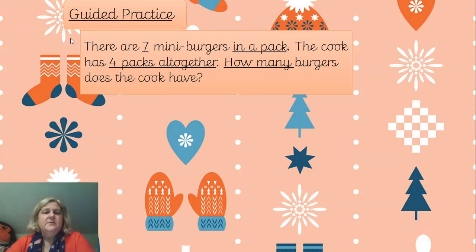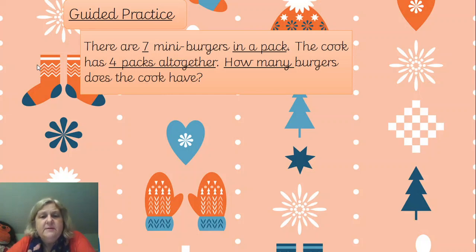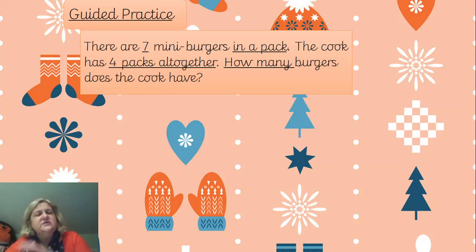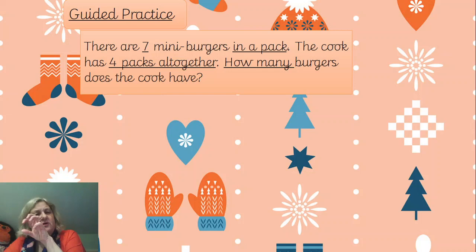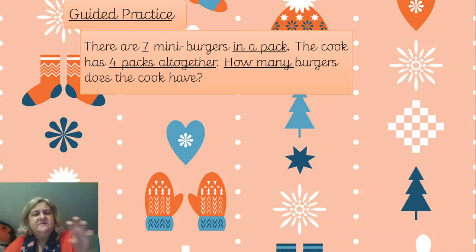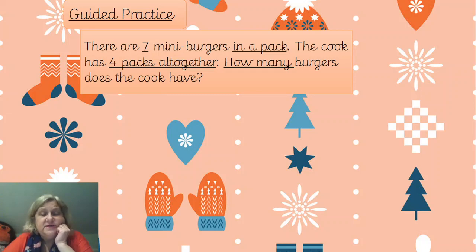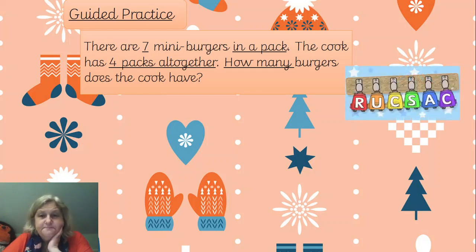This is a guided one: there are seven mini burgers in one pack - seven in one pack. The cook has four packs altogether. One pack has got seven burgers and they've got four packs, so I've got four lots of seven mini burgers. My answer is definitely going to be more than just seven mini burgers, so this is going to be a multiplication question.